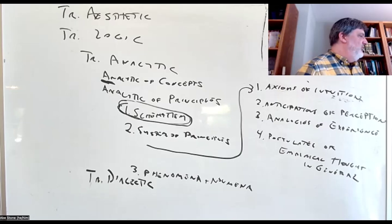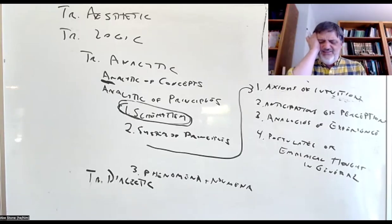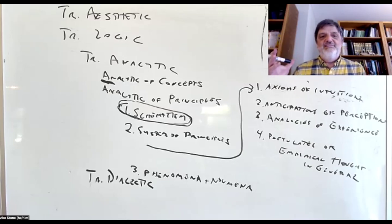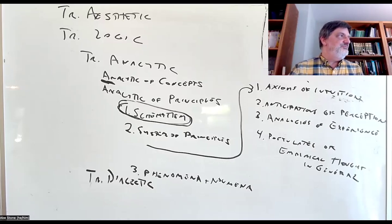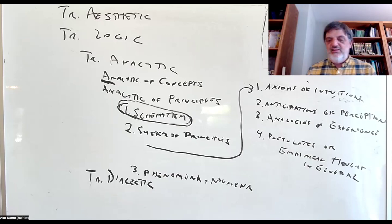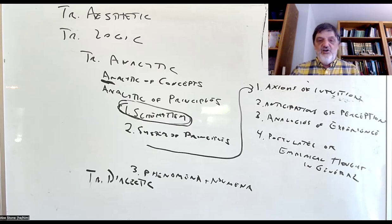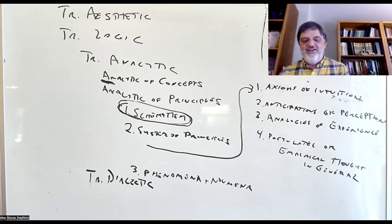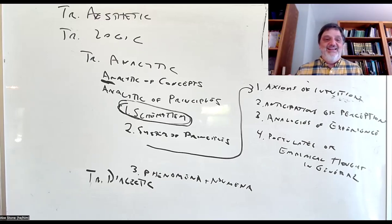The categories have an order: quantity is the first. Kant doesn't really say why there's that order anywhere, but it's always the same order. If it isn't, he makes a remark about why we do it in a different order — for example, in the paralogisms where he starts with the category of relation or substance, and then says we don't go in the usual order because of a certain explanation.